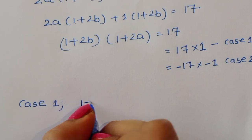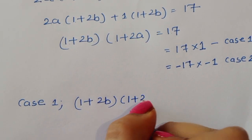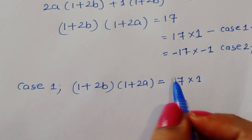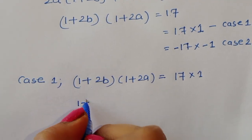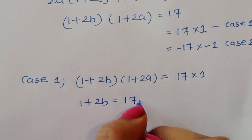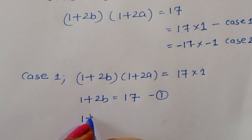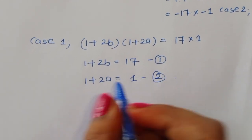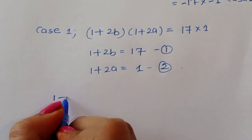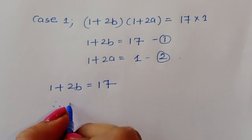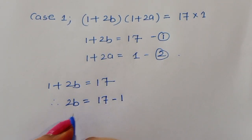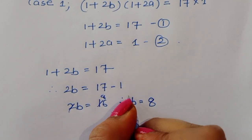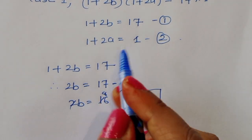In Case 1, (1 plus 2b) times (1 plus 2a) equals 17 times 1. Comparing left-hand side and right-hand side, we get equation 1: 1 plus 2b equals 17, and equation 2: 1 plus 2a equals 1. From equation 1, 2b equals 16, so b equals 8.